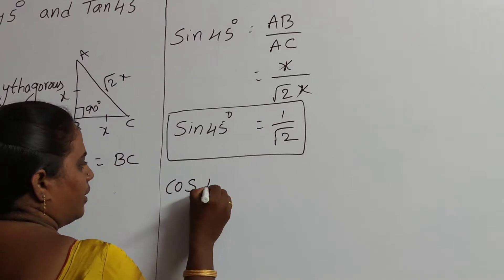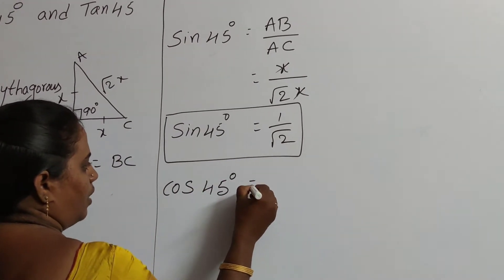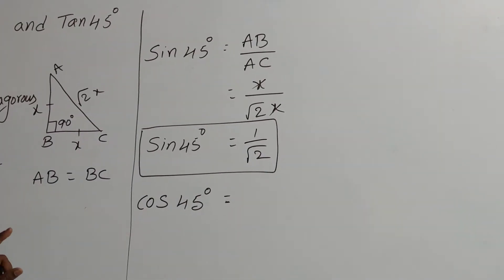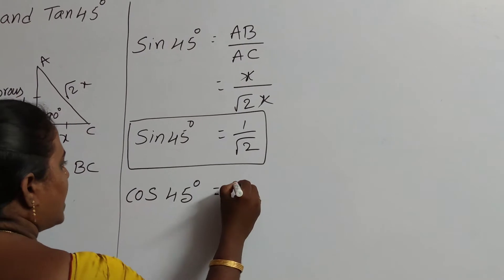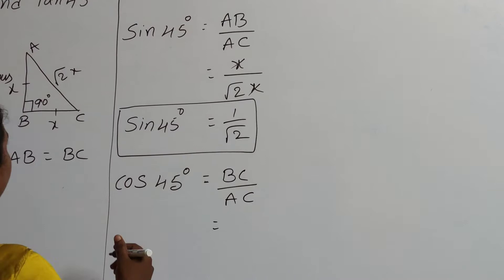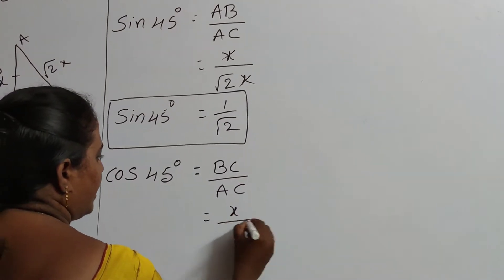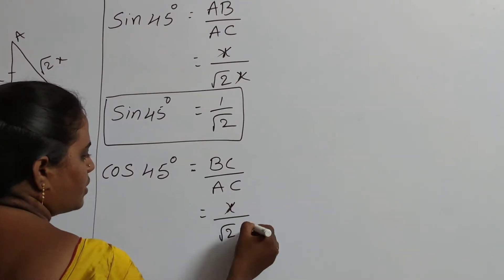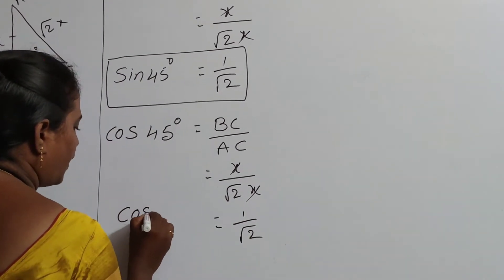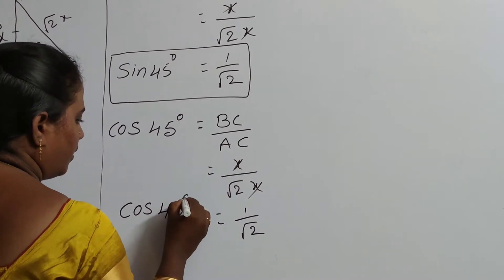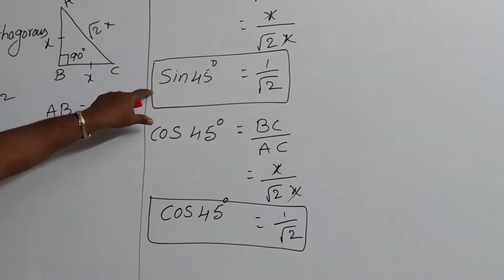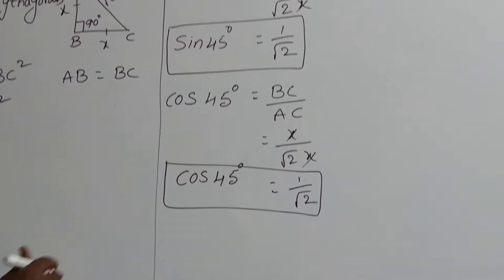Cos 45 degrees equals adjacent side by hypotenuse. The adjacent side is BC and hypotenuse is AC. BC equals x and AC equals root 2 times x, so x cancels here as well. Therefore cos 45 degrees also equals 1 by root 2.